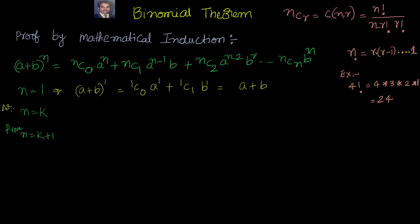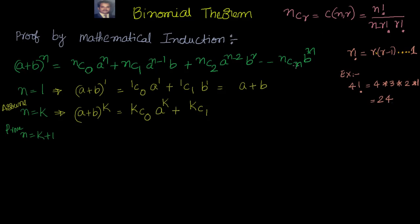Now let's assume it's true for n equal to k. If it is true for n equal to k, then a plus b whole to the power of k equals kC0 times a to the power of k, plus kC1 times a to the power of k minus 1 times b, and so on, up to kCk times b to the power of k.